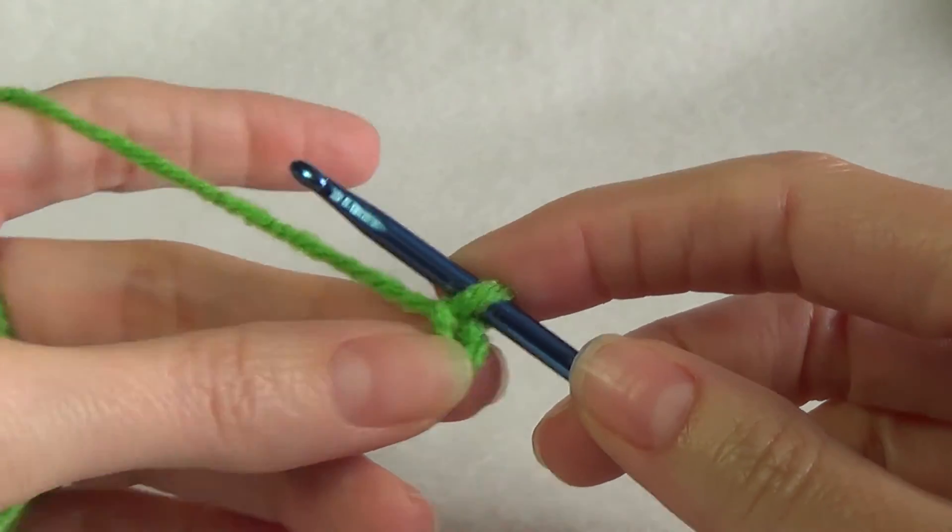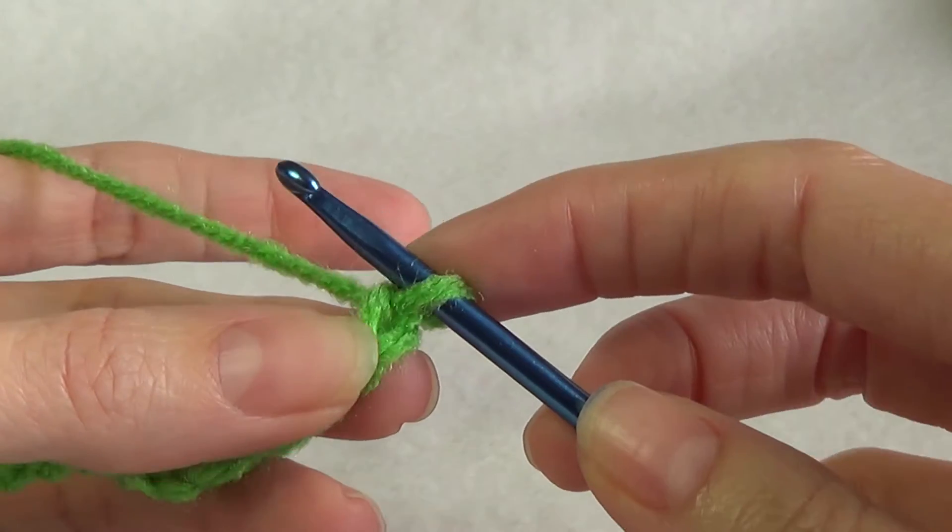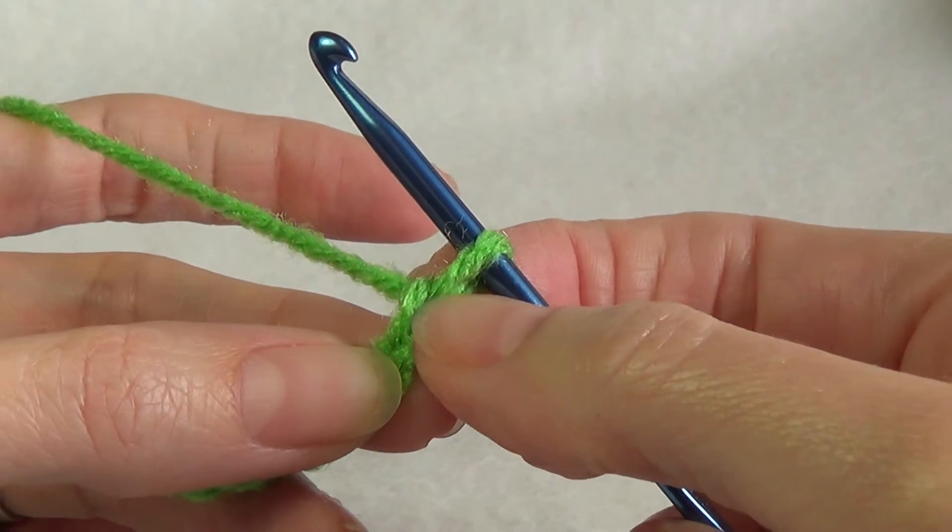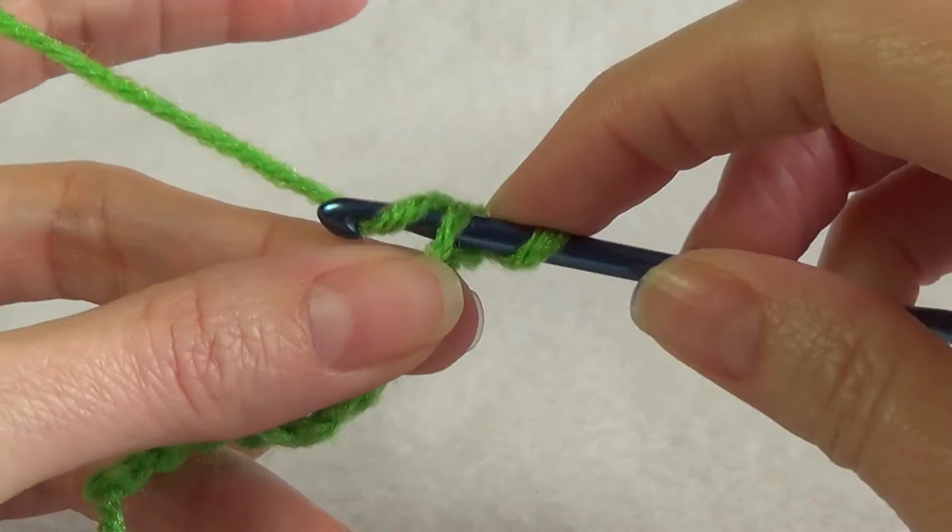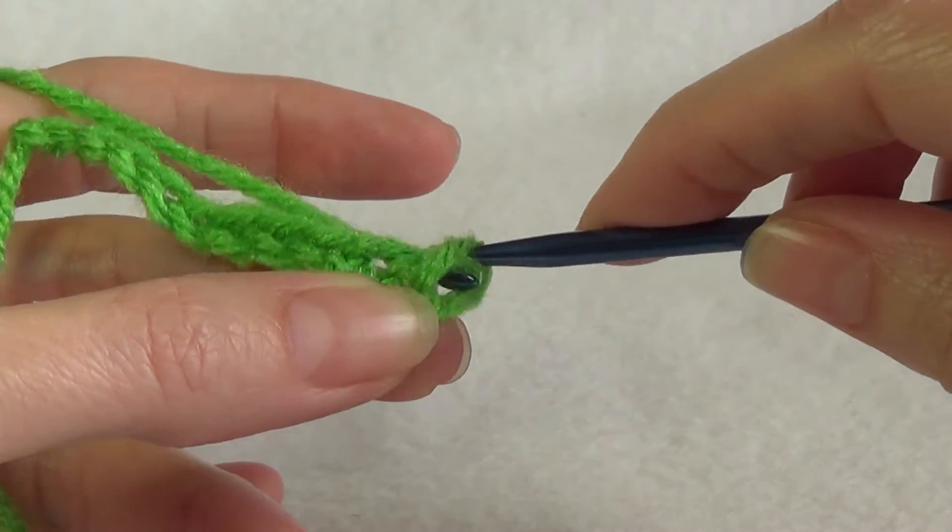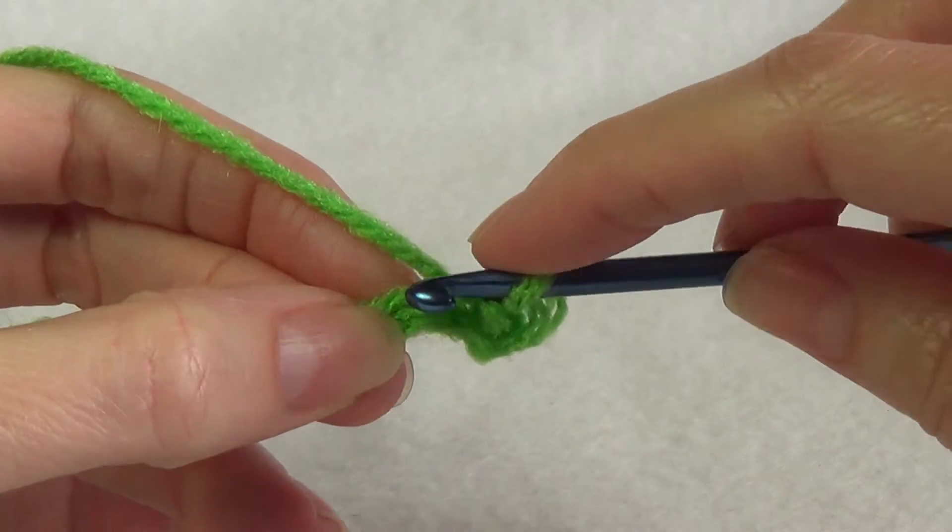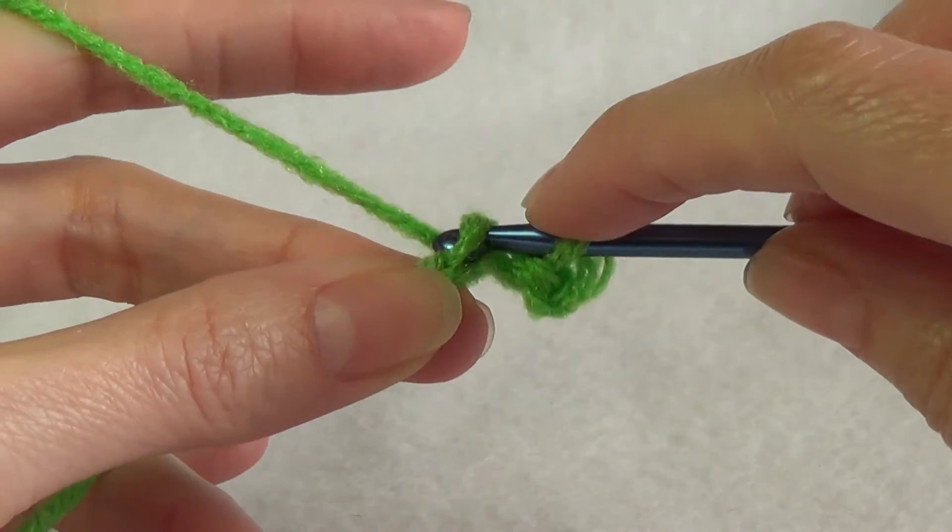We're going to slip stitch into the second and third chain, so we don't count the loop that's on our hook. This is the first and this is the second. So into there, slip stitch, and then into the third, slip stitch.